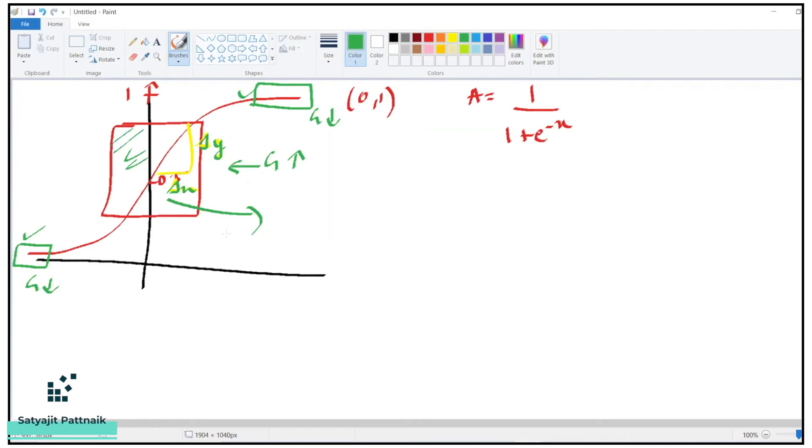And the range is always between 0 to 1, as compared to minus infinity and infinity. Because in linear function, if I draw a line like this, x values varies from infinity till minus infinity.